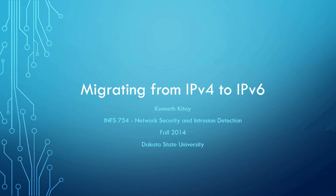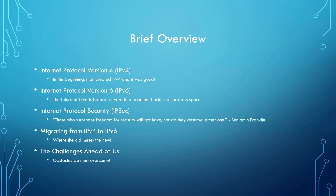My name is Kenneth Cate and this is my TED talk presentation on migrating from IPv4 to IPv6 for INF 754, Network Security and Intrusion Detection, here at Dakota State University. Today we will be going over the internet and getting a better understanding of the foundation in which it was built. We will look at an aging protocol in which our current network computers and devices communicate, then take a deeper look at a newer protocol we are slowly migrating to, along with a new security protocol and the challenges ahead. The inception of the internet was developed by a few, but the evolution of the internet is guided by the many.